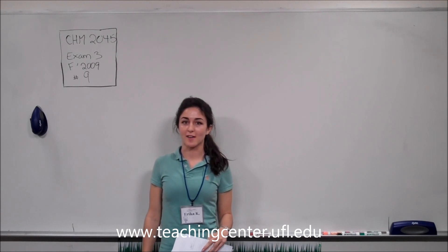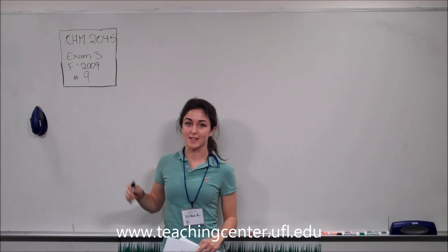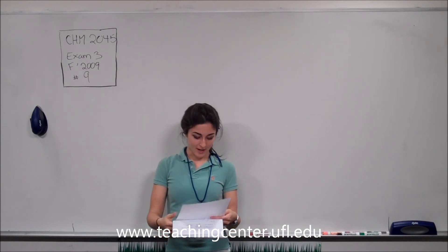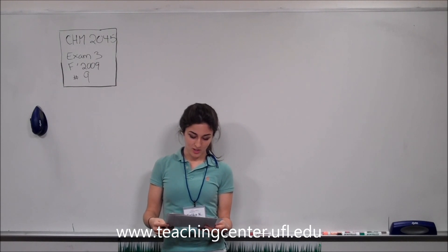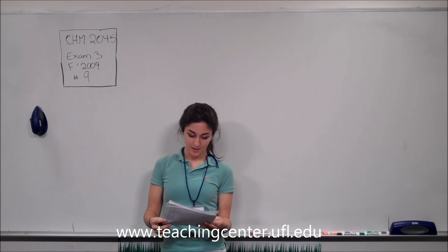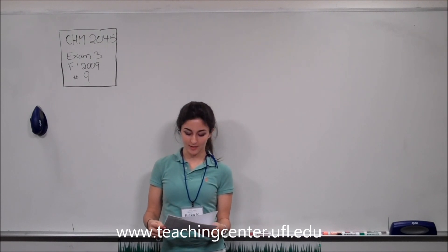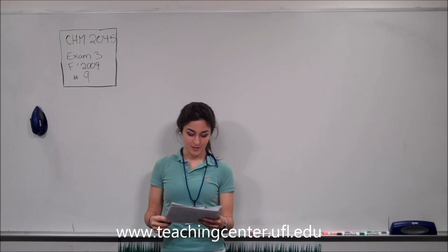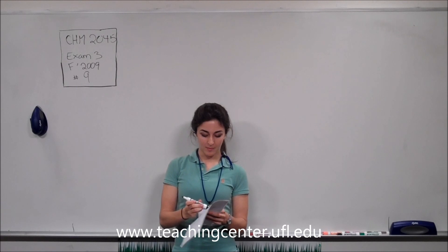Hi, this video is for CHEM 2045, and we're working with exam number 3 from fall 2009. We're going to do problem number 9 right now. Problem number 9 says we have a flask that's 1 liter, and initially there is CO2 and O2 in it, and they react — it asks us to calculate the final pressure in the flask. The first thing we're going to do is write down what we know, which is the information given in the problem.